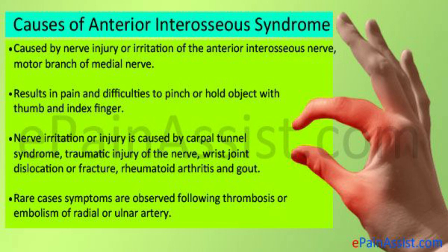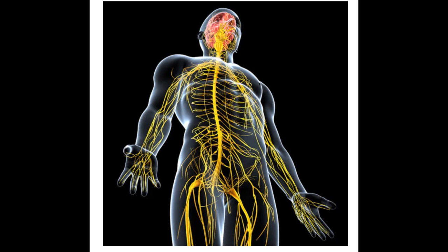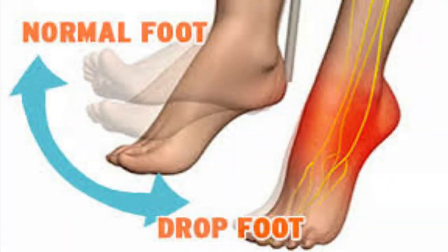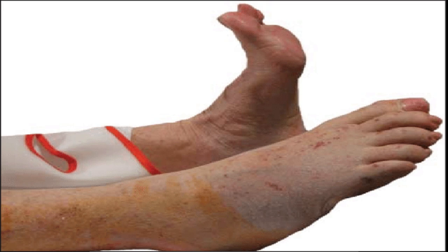Moving to the lower limb, the last sign is foot drop. Similar to wrist drop in the upper limb, foot drop is an abnormality where there is dropping of the forefoot due to weakness, irritation, or damage of the sciatic nerve. Any trauma to this nerve — or paralysis of the surrounding muscles — results in foot drop.